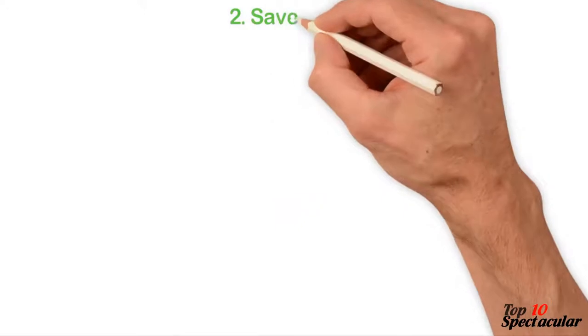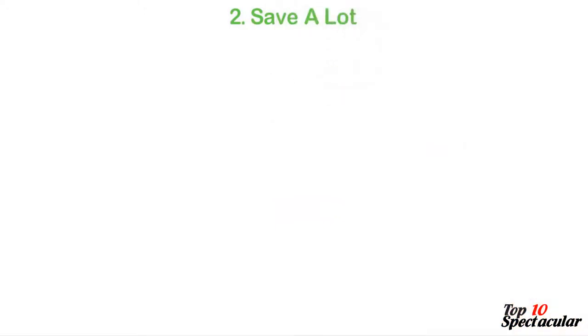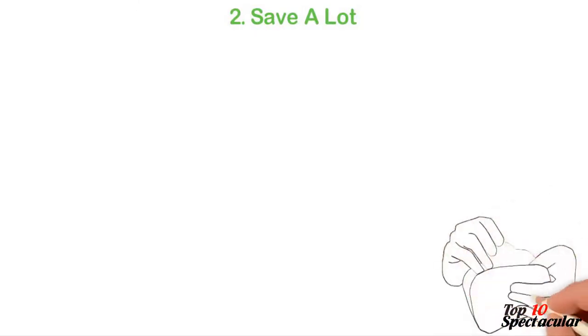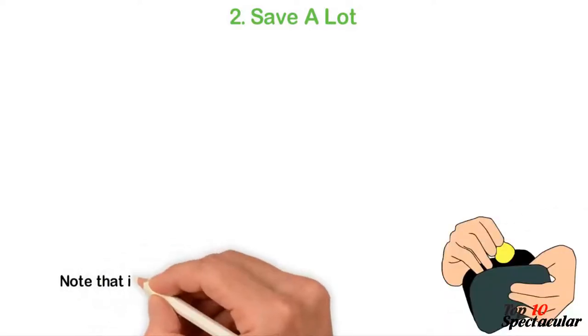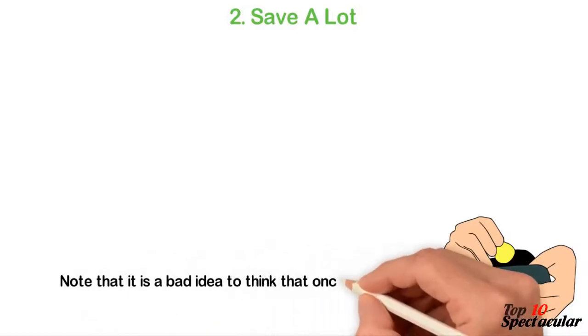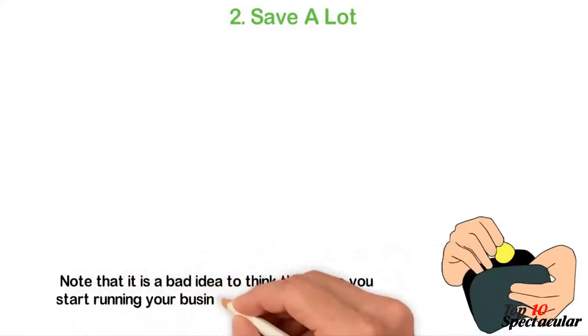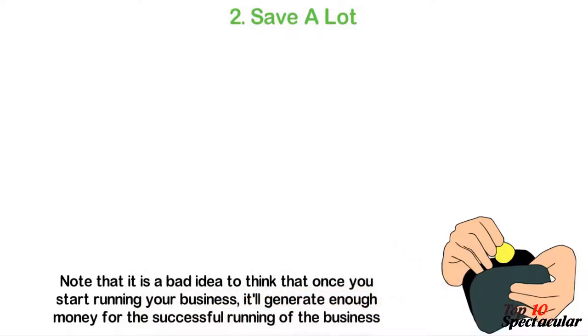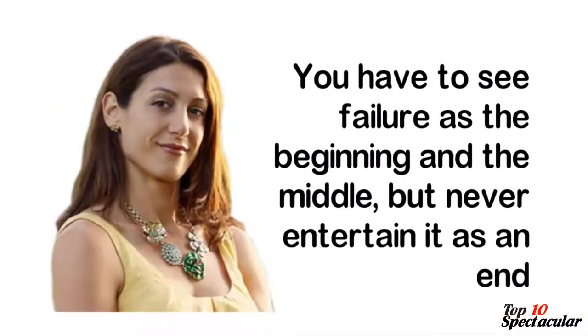2. Save a lot. Once you have your goals, vision and mission all sorted out, you want to save a lot of money for execution. Don't start your business with the presumption that you will get funds right out of the gate. Note that it is a bad idea to think that once you start running your business, it will generate enough money for the successful running of the business. Remember Jessica Herring's advice? You have to see failure as the beginning and the middle but never entertain it as an end.